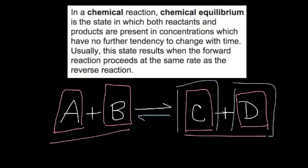When the rate of my forward process — meaning A and B going to C and D — and the rate of C and D going back to A and B, when the rate of those things are the same, we are in what we call chemical equilibrium.